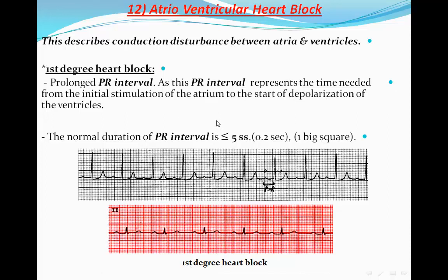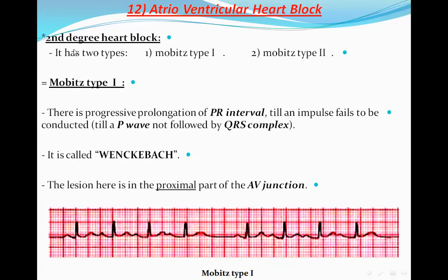So first degree heart block is prolongation of the PR interval, but it is fixed prolongation — this PR interval is prolonged but equal to each other throughout. Second degree heart block has two types: Mobitz type 1 and Mobitz type 2. In Mobitz type 1, there will be progressive prolongation of the PR interval — it is not fixed.